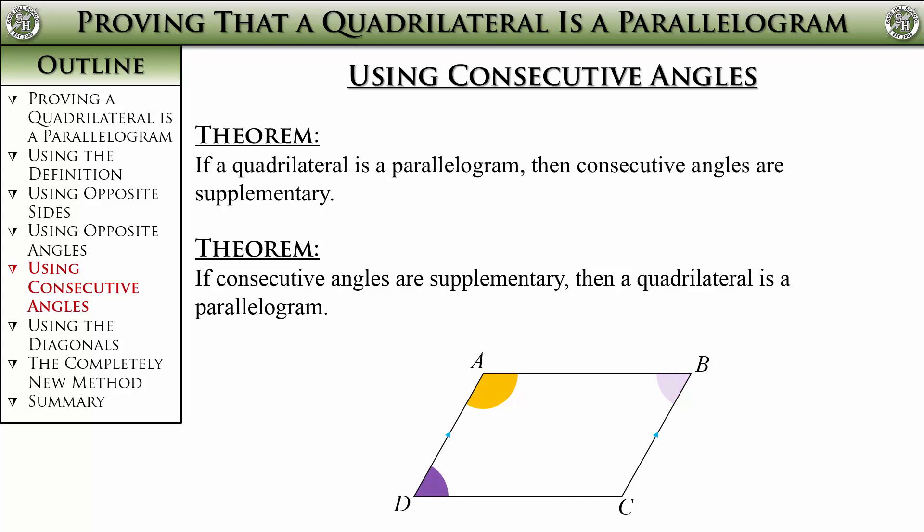If we show this set of consecutive angles are supplementary, then we have another set of same side interior angles that are supplementary. These same side interior angles let us prove that this pair of lines is parallel. We have finished off our parallelogram, so instead of having to show that all four pairs of consecutive angles are supplementary, we only really needed to show two, which leads us to the improved theorem.